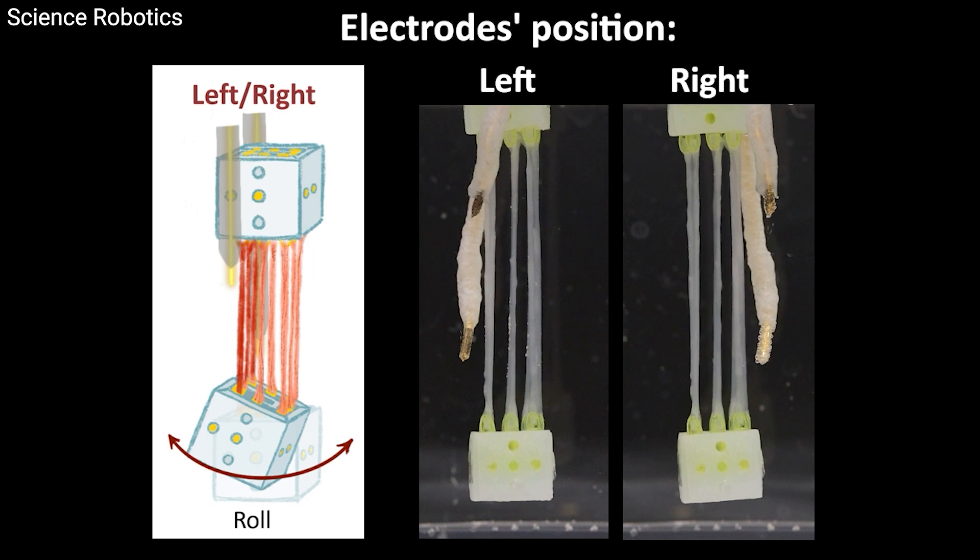They've dubbed these muscle bundles mamutas. Think of them as like sushi rolls made of muscle fibers. It's kind of gross, but it's true.